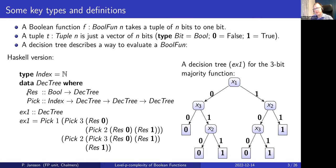In Haskell, a decision tree is either a leaf — called 'Res' for result — which gives the boolean output, or a node with an index and two sub-trees: the left and right, representing the decision tree you reach if you picked false or true. This is the syntactic representation of exactly the same tree shown graphically. We're now close to defining the cost.